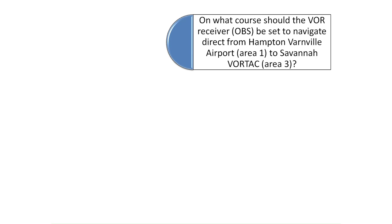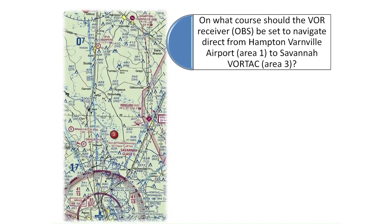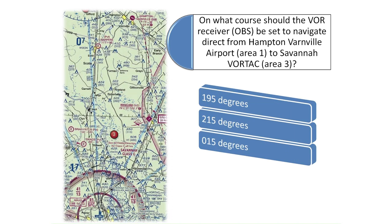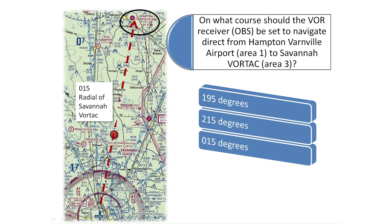The first question asks: on what course should the VOR receiver OBS be set to navigate direct from Hampton-Varnville Airport Area 1 to Savannah-Vortac Area 3? Notice Hampton-Varnville Airport in the top right of the chart and the Savannah-Vortac in the bottom left. After drawing a line with a straight edge, we can see that Hampton-Varnville Airport is on the 015 degree radial of the Savannah-Vortac.